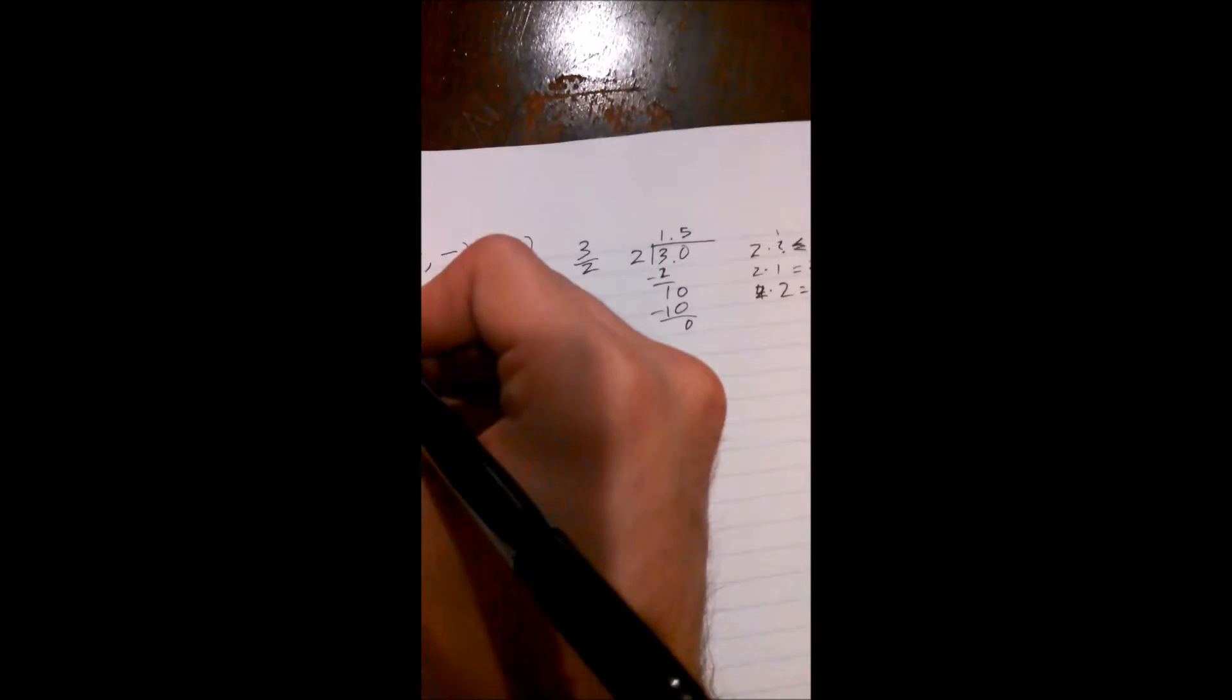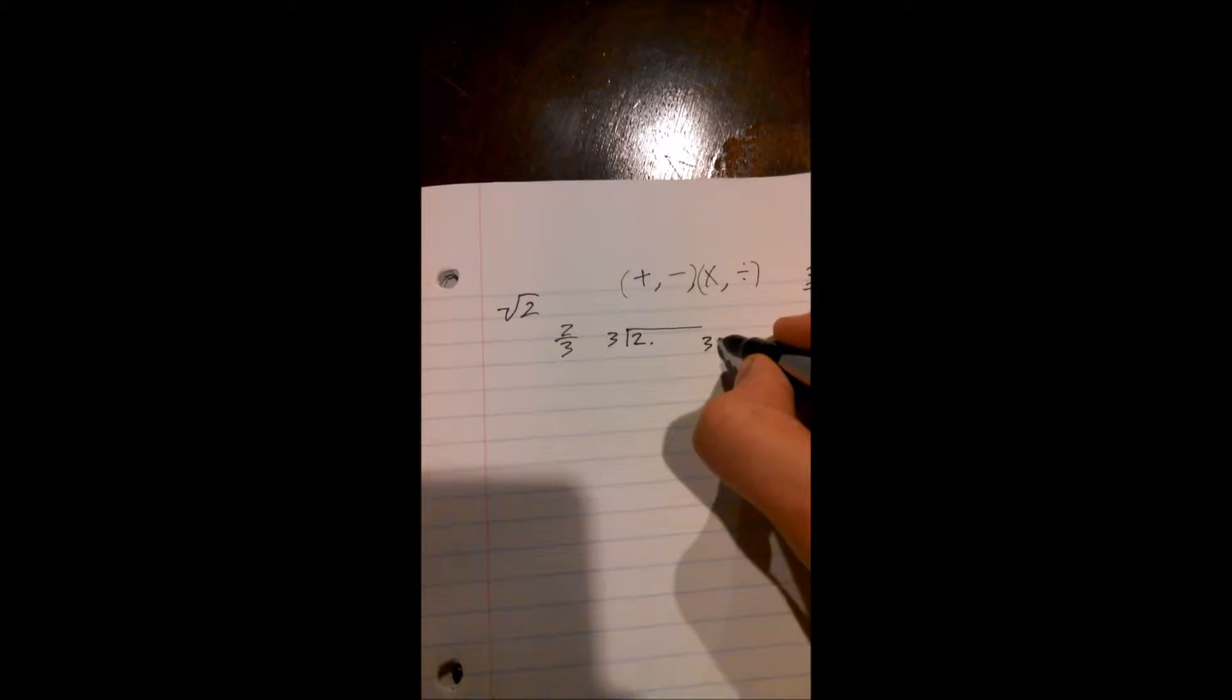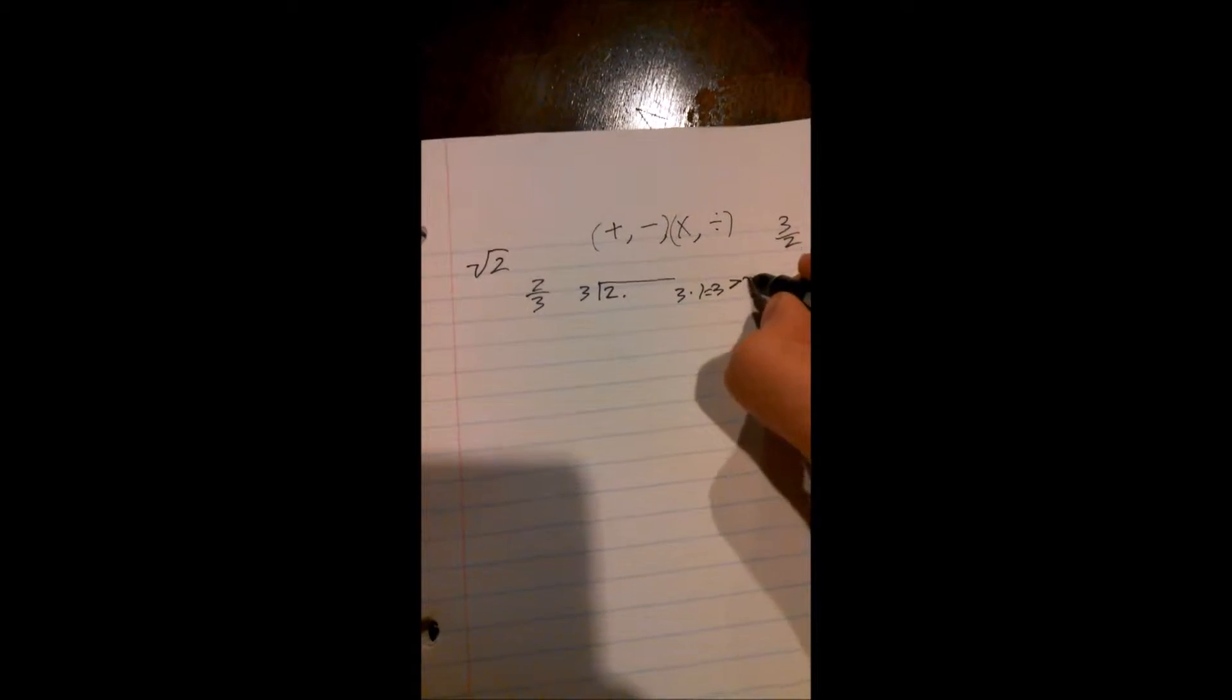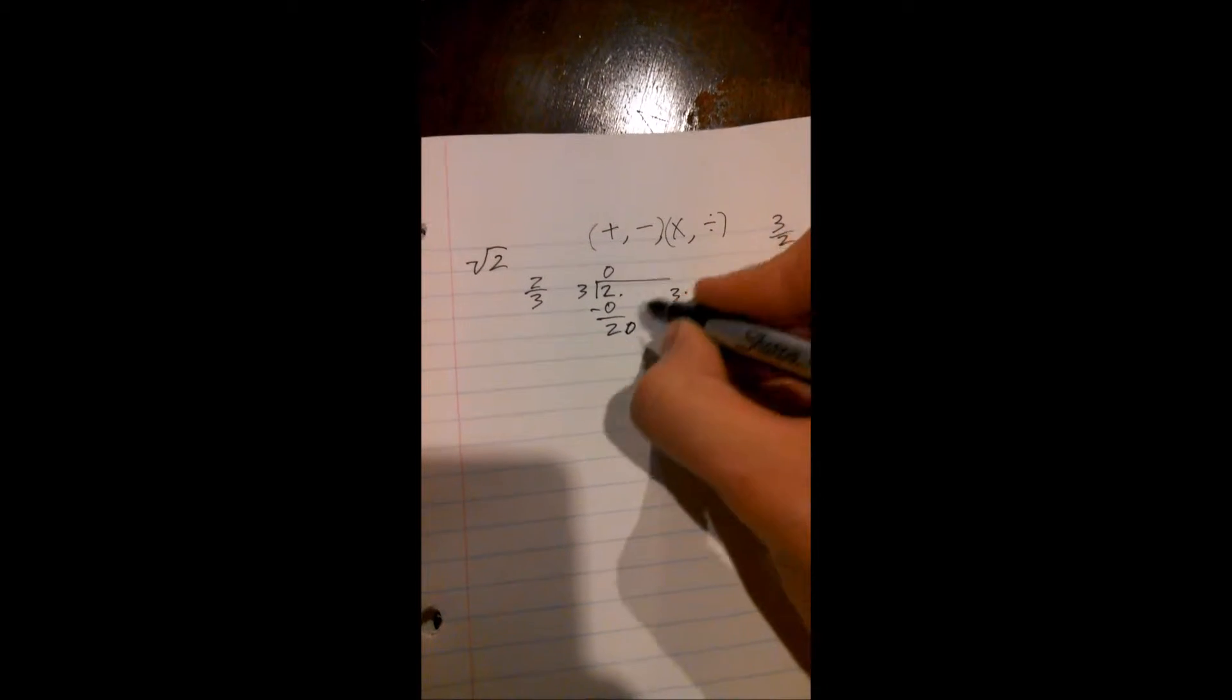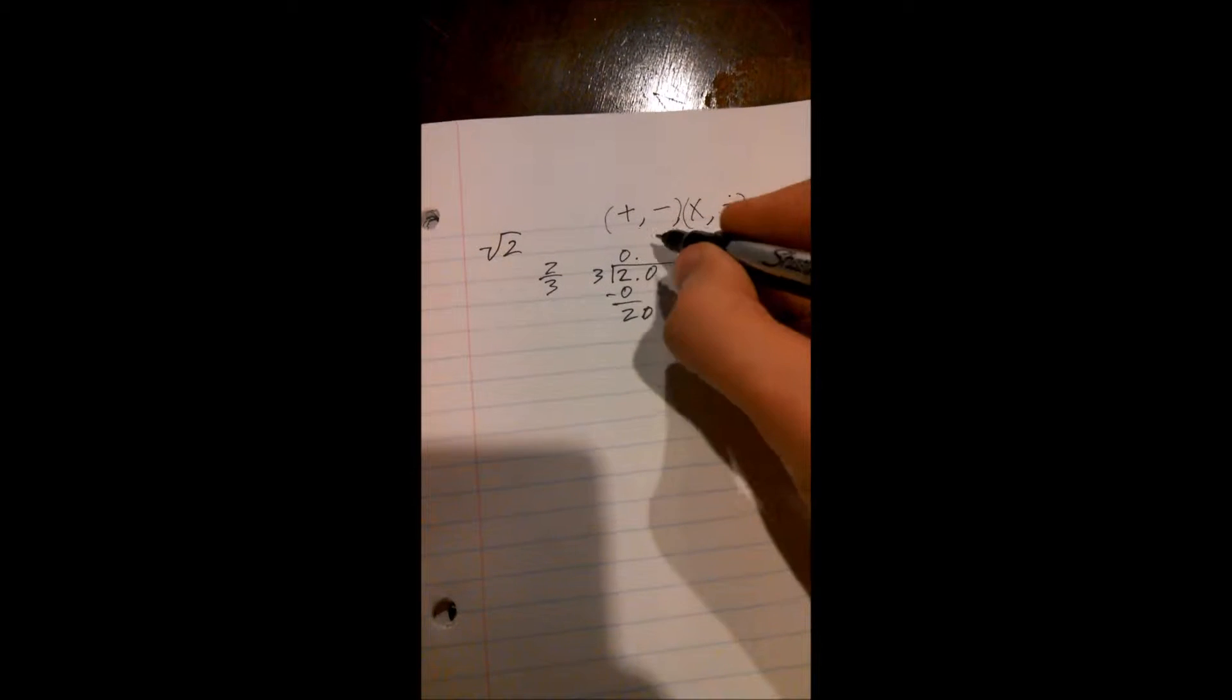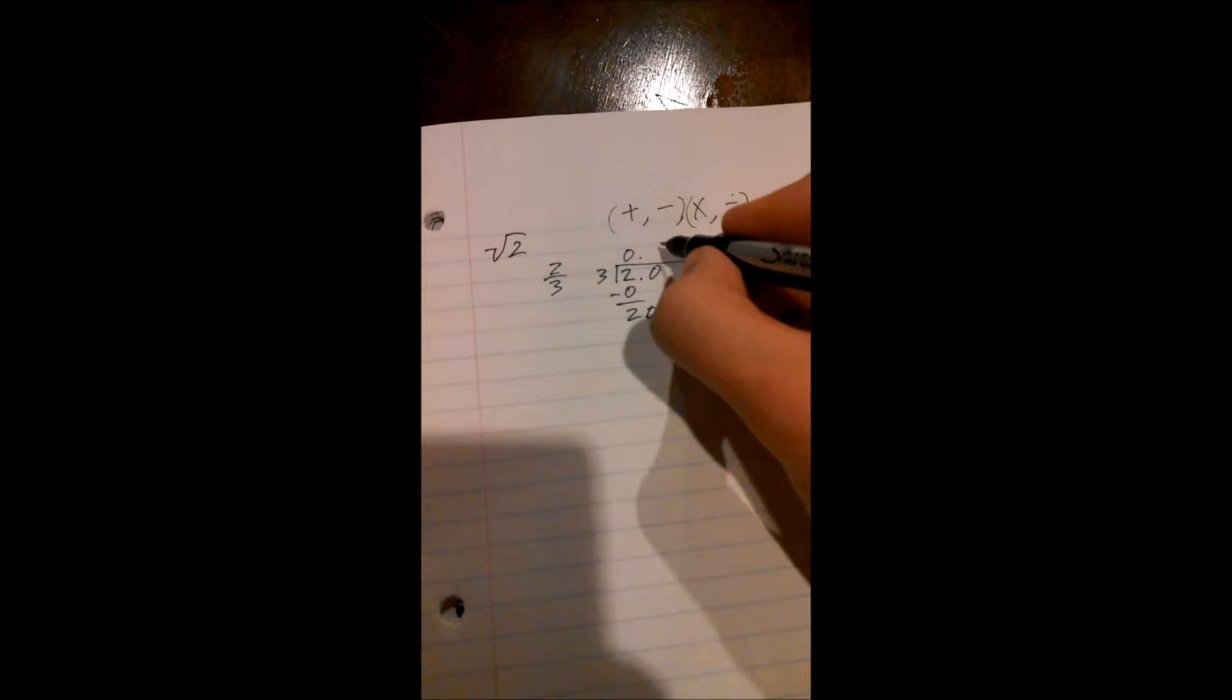But there are fractions such as 2 thirds, which doesn't give us a set number of digits in base 10. So 3 times 1 is 3, and that is greater than 2. So we can't use that there, so we use 0. So we plug in a 0 there, and that gives us a remainder of 2. Bring down our next digit, which is another implied 0. What times 3 is less than 20? We can try 7. 3 times 7 is 21, which is greater.